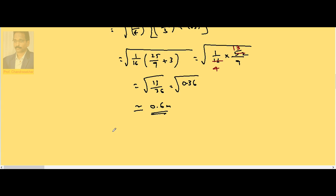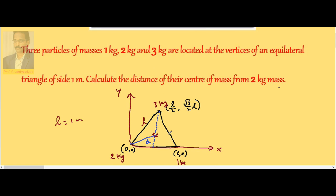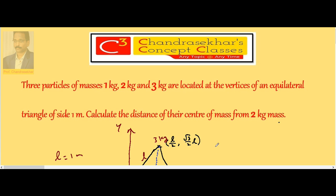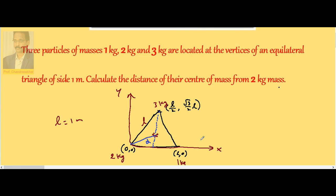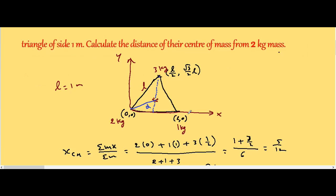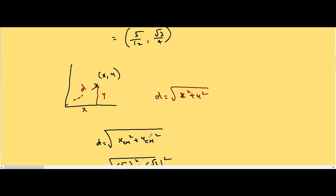So the distance of the center of mass from the 2 kg mass is approximately 0.6 meter. In general, for problems like this: place the equilateral triangle on the x-y plane with coordinates (0,0), (L, 0), and (L/2, (√3/2)L), assign the masses, calculate x_cm and y_cm, then use d = √(x_cm² + y_cm²) to find the distance.